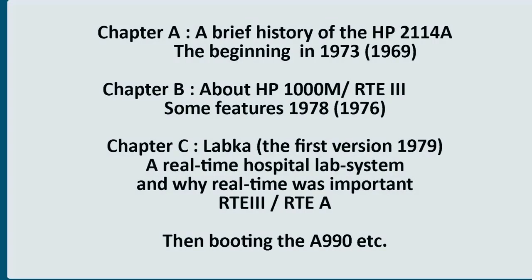A story like this must have a beginning, and I have divided the beginning into three parts. Part A covers the HP2114A, a computer from 1969 with 64 kilobytes of memory that we bought and used in 1973. Part B is a giant leap forward to the HP1000 M RTE3 — a computer with an advanced real-time operating system. Part C is a description of the IT laboratory system, showing the connection between the HP1000 system facilities, the operating system, and the tasks the system had to perform.